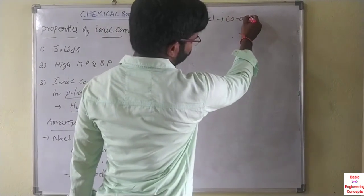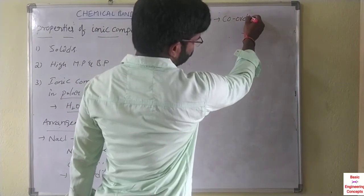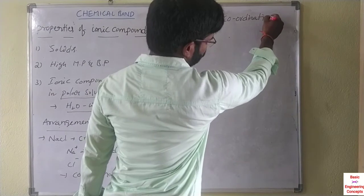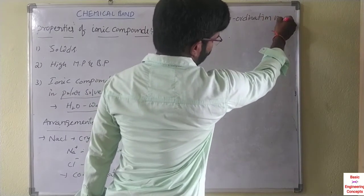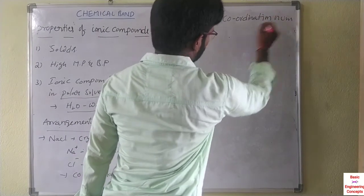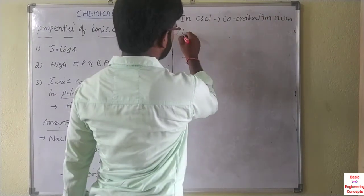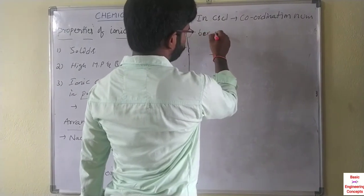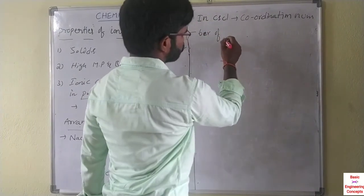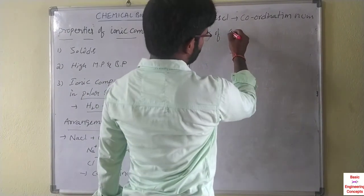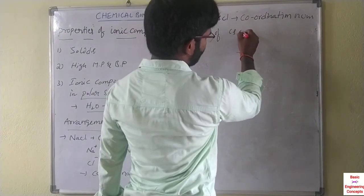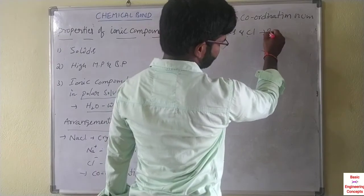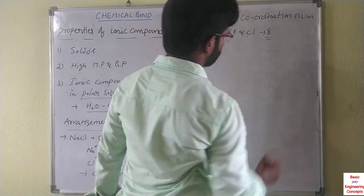Next, in cesium chloride structure, the coordination number of both Cs and Cl is 8. That is a very important question.